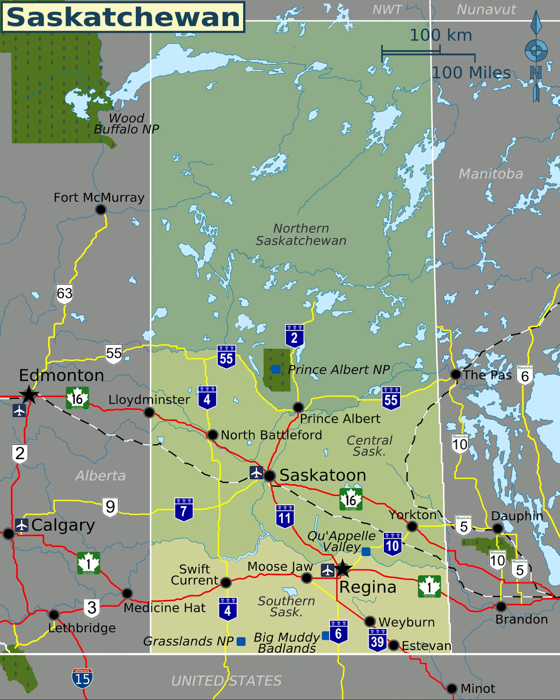Hello my friends. This is a map of beautiful Saskatchewan. Saskatchewan is the only province without a natural border. As its borders largely follow the geographic coordinates of longitude and latitude, the province is roughly a quadrilateral, or a shape with four sides.